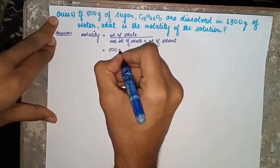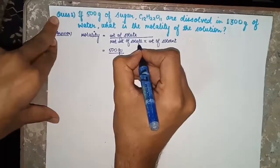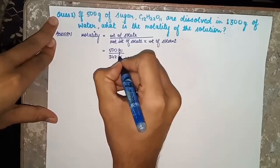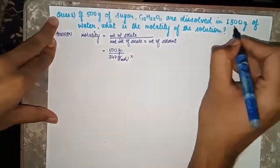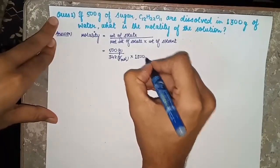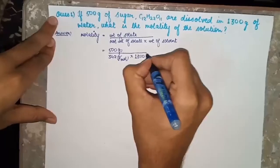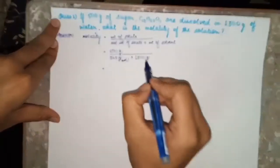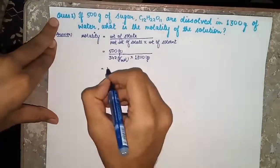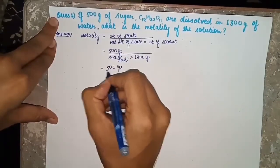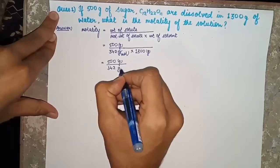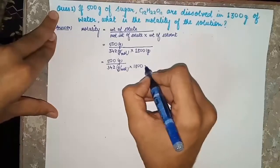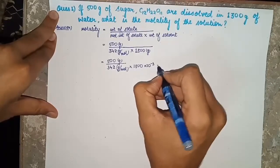Here the solute is sugar and the solvent is water. Weight of solute is given as 500 grams. Molecular weight of sugar is 342 grams per mole. Weight of solvent is given as 1300 grams. Since molality is defined as moles of solute per kilogram of solvent, it is necessary to convert 1300 grams into kilograms.